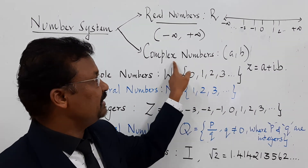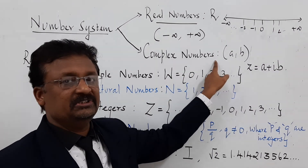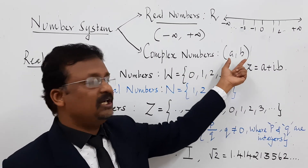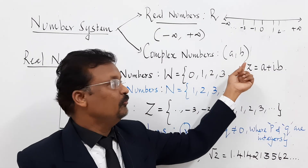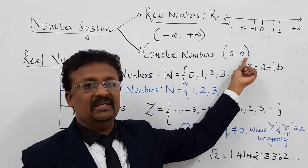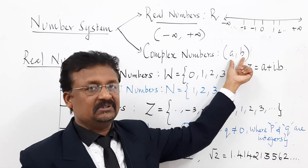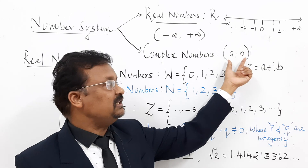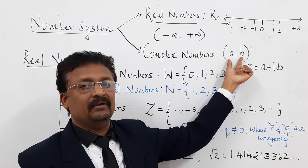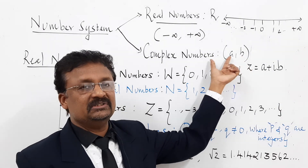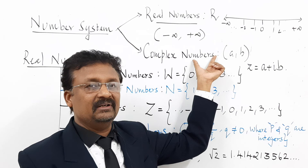The second type of number system is complex numbers. The definition of a complex number is an ordered pair of real numbers. For example, A and B, where A and B are two real numbers written in ordered pair form — this is called a complex number.